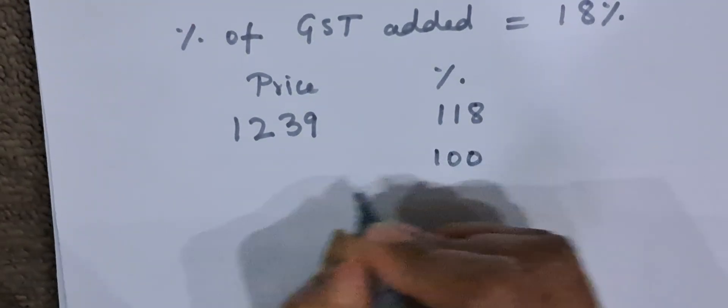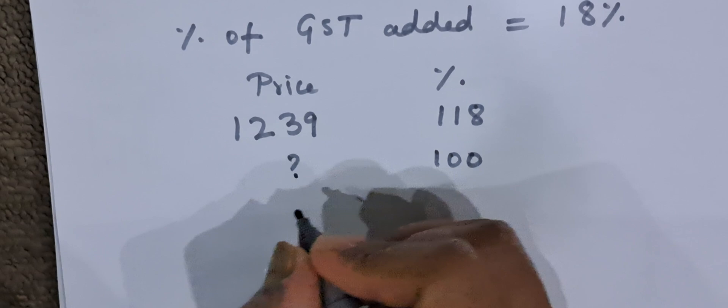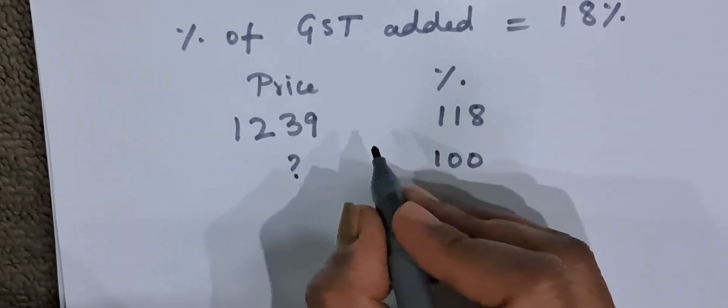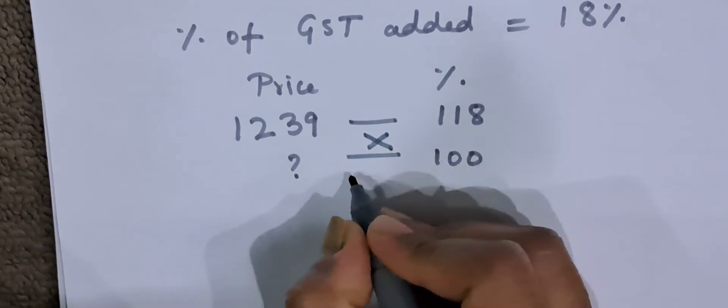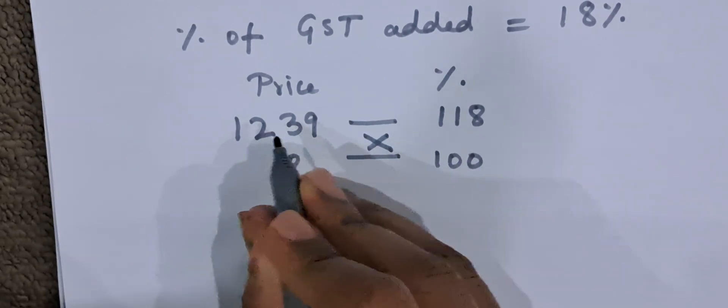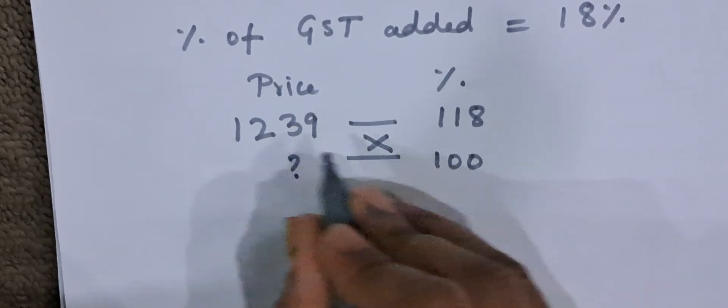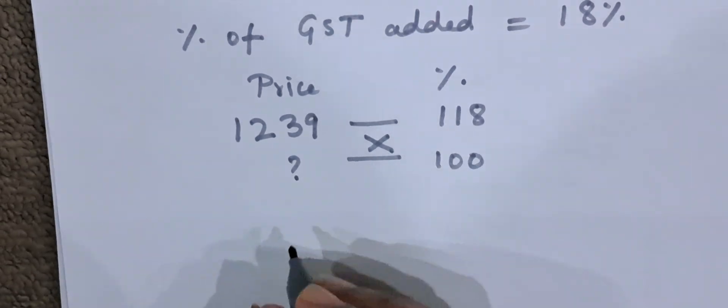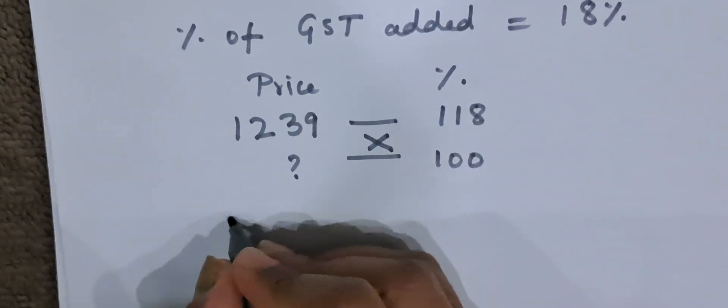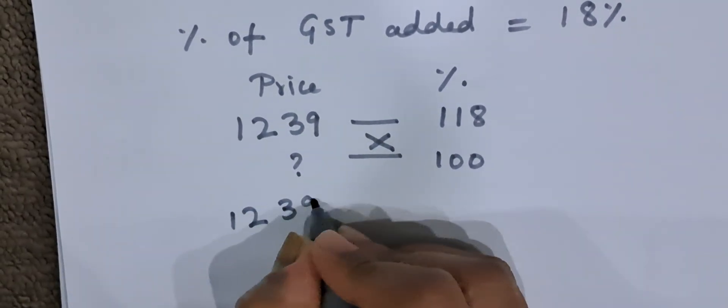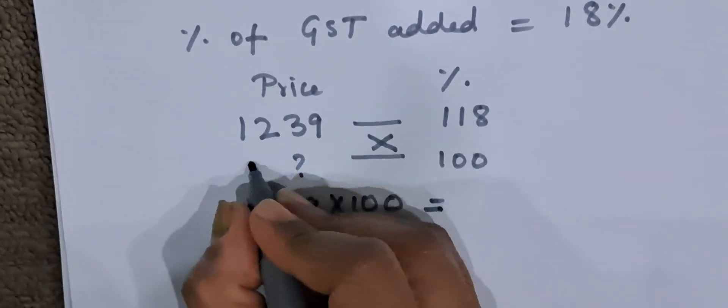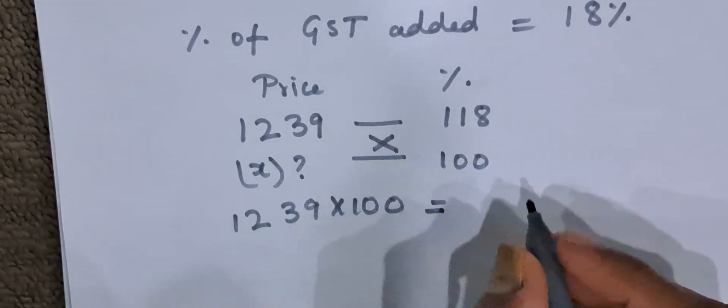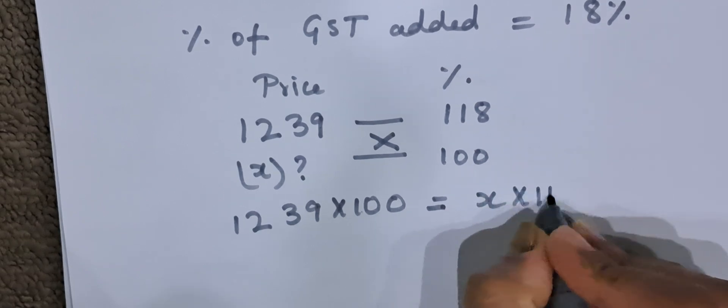100% - how much price? What is the price of the article without the GST? Let us cross multiply these two. 1239 into 100. Opposites get multiplied. 1239 into 100 is equal to - let us take this as X - X into 118.